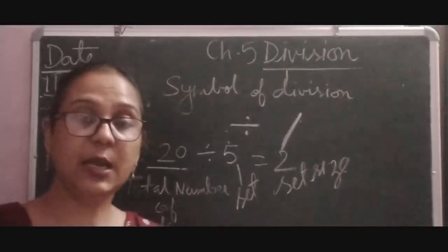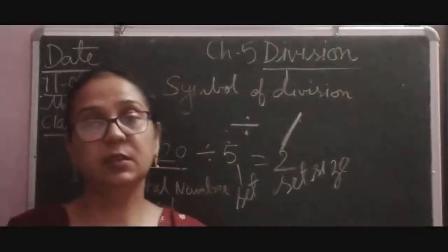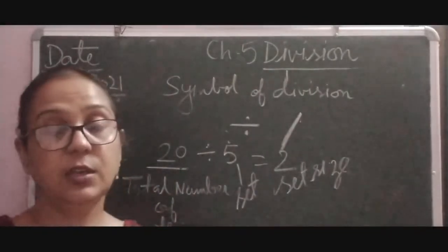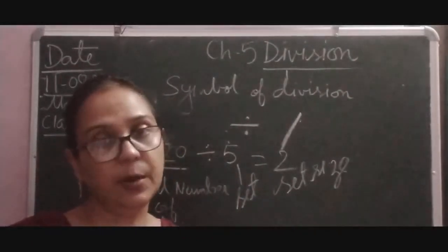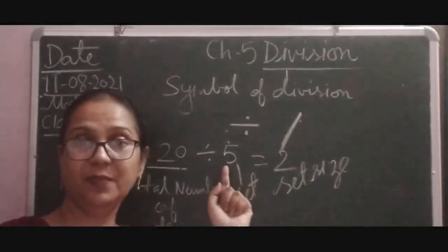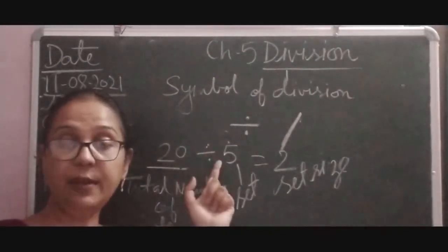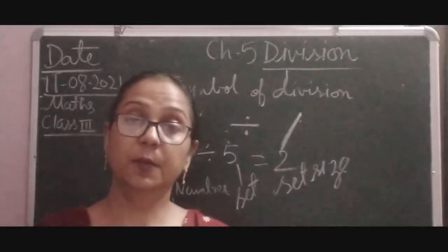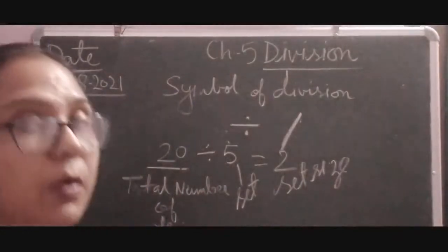Division is repeated subtraction, just as multiplication is repeated addition. When we subtract 5 from a number repeatedly, that process is division. For example, subtracting 5 from 20 five times gives us the result of 20 divided by 5.